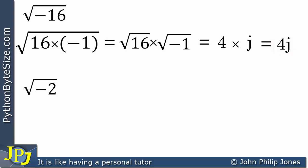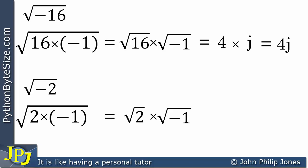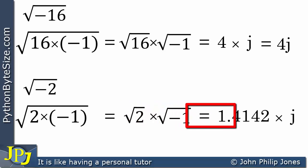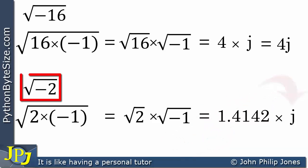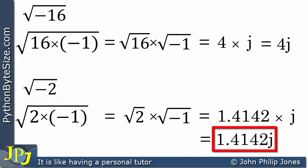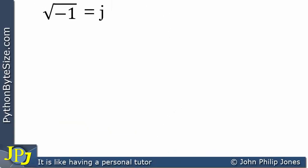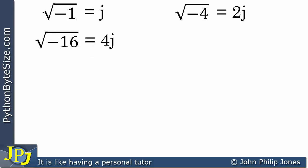Let's consider the square root of minus 2. I can write that out as 2 times minus 1, so we're taking the square root of 2 times minus 1, which equals the square root of 2 times the square root of minus 1. The square root of 2 is 1.4142 to several decimal places, and the square root of minus 1 is j, so the square root of minus 2 is 1.4142j. To summarize: the square root of minus 1 is j, the square root of minus 4 is 2j, the square root of minus 16 is 4j, and the square root of minus 2 is 1.4142j.